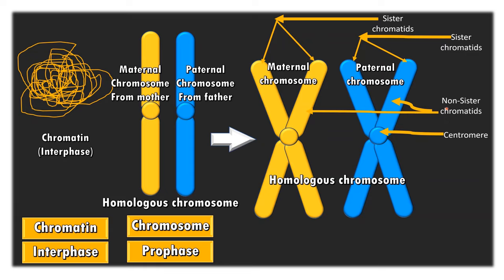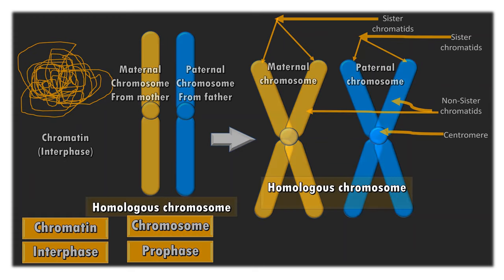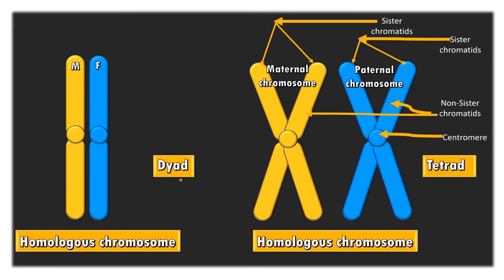When we learn meiosis stages, two terms are very important: dyad and tetrad. These two terms are related to chromosomes only. When homologous chromosomes show one arm each, then it is called a dyad — homologous chromosomes with one arm each is what is called a dyad. When each chromosome splits into two arms, then in a homologous chromosome pair we can see four arms. Homologous chromosomes with four arms is called a tetrad, whereas homologous chromosomes with two arms is called a dyad. Remember the words dyad and tetrad, which are very important to understand meiotic stages.